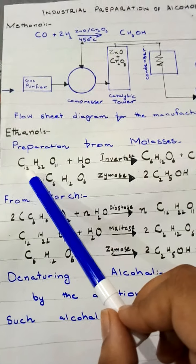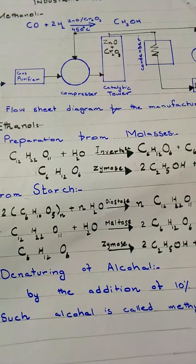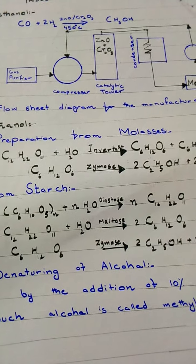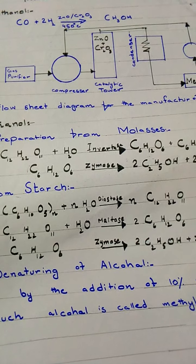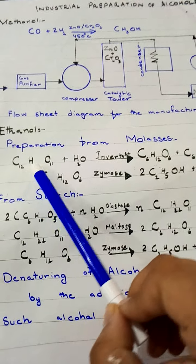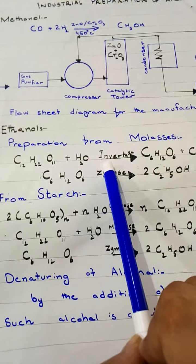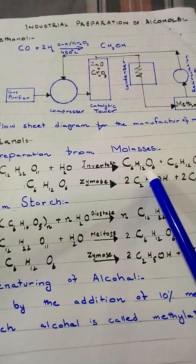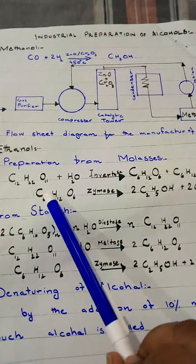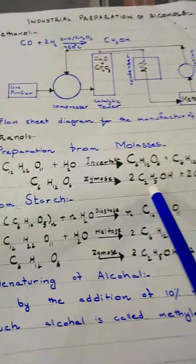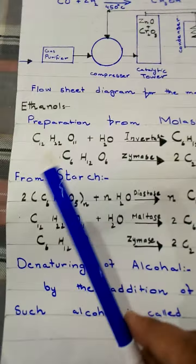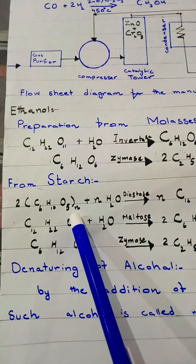Molasses is defined as the residue obtained after the crystallization of sugar from concentrated sugar cane juice. It undergoes fermentation in the presence of enzymes present in yeast to give ethanol. The formula: sucrose (C₁₂H₂₂O₁₁) + H₂O is hydrolyzed in the presence of invertase enzyme to give two molecules of C₆H₁₂O₆ (glucose). Glucose is further converted in the presence of enzyme (zymase) into ethanol (C₂H₅OH) and carbon dioxide.